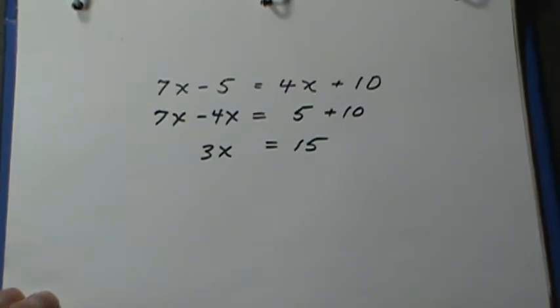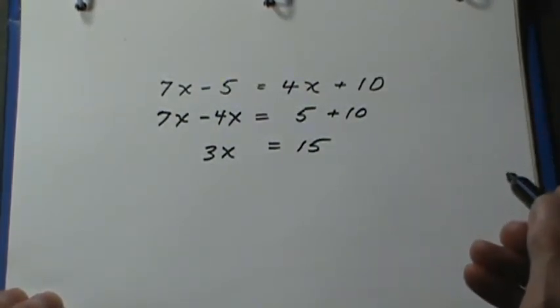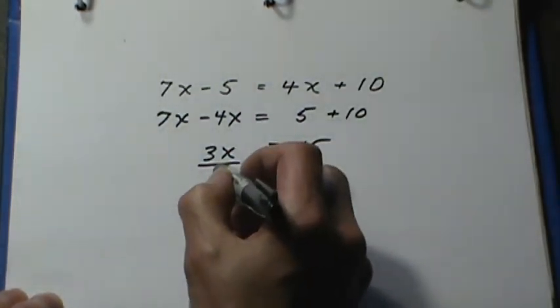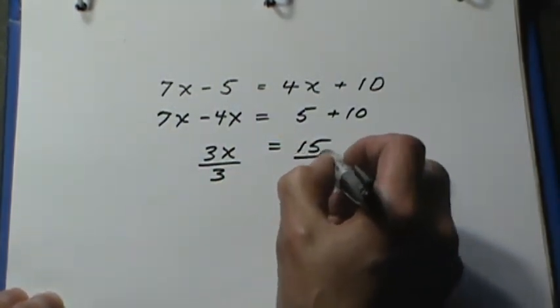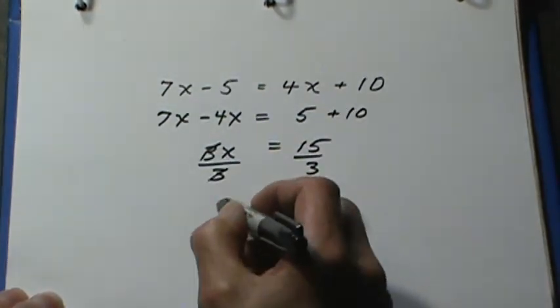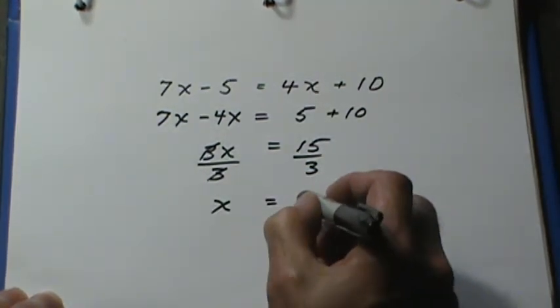Now remember, the very first rule was, whatever you do to one side, you must do to the other side. So I'm going to divide this side by 3, which means I divide the other side by 3, in order to remove the 3 from the x. And x equals 5.